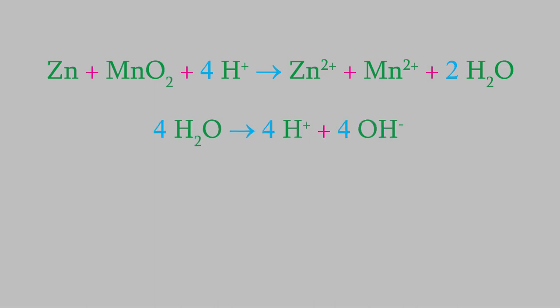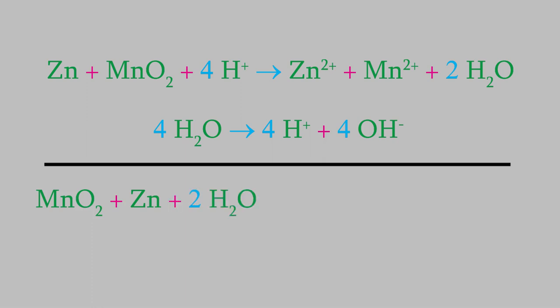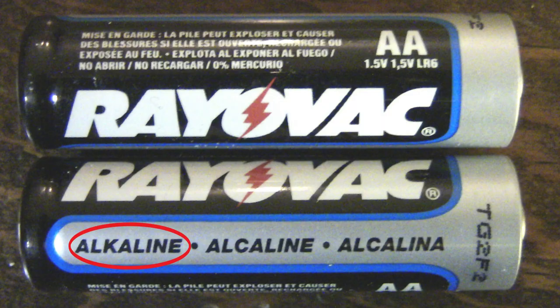That'll give us a final result of one manganese dioxide, one zinc atom, and two water molecules on the left, and a manganese 2 ion, a zinc 2 ion, and four hydroxide ions on the right. When a battery contains a basic environment like this one does, we say that it's an alkaline battery, and most of the dry cells you probably have in your house are alkaline batteries.